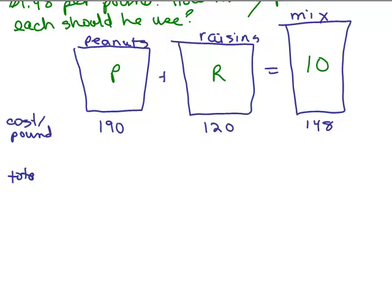So this would be the total cost. How much would the peanuts cost? Well, we've got P pounds, 190 cents per pound. So that would be 190 cents for each pound, or 190P. You have to multiply how much per pound times how many pounds.